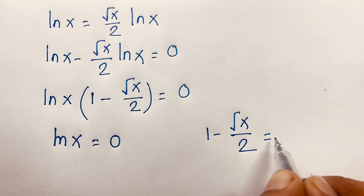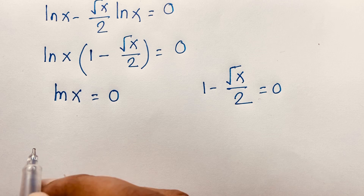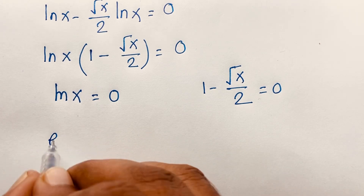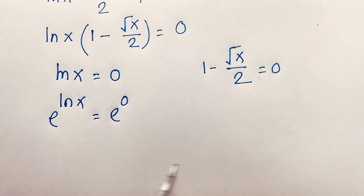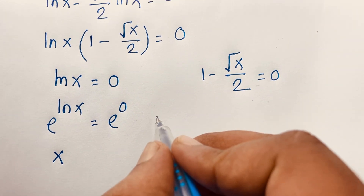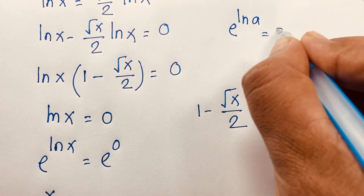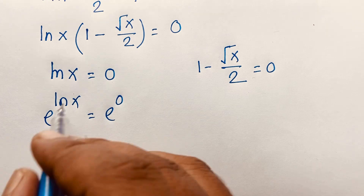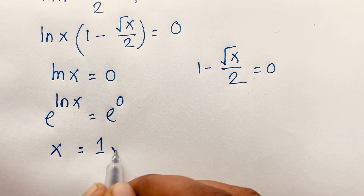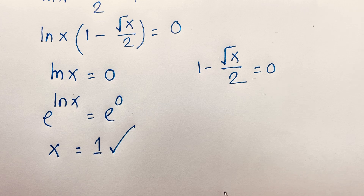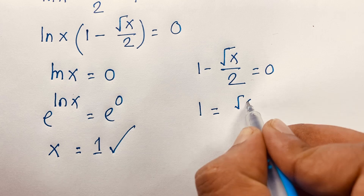For the first case, ln x equals 0. I apply e to both sides: e to the power ln x equals e to the power 0. We know that e to the power ln x equals x, and e to the power ln a equals a according to this law. So e to the power ln x is x, and e to the power 0 is 1. Therefore x is equal to 1.